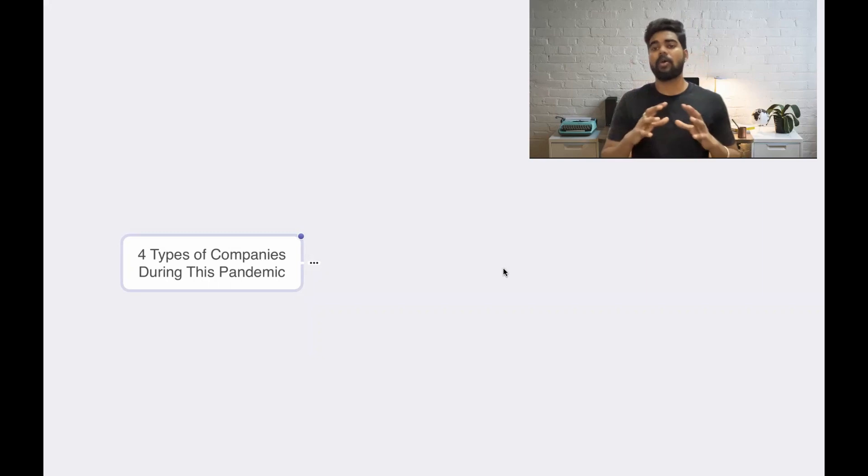I categorized all the companies in the world into four types. Whatever companies you take, those companies fall under these four categories. So let's figure out what is that four categories and what category that you need to choose in this pandemic, which will make your career better, your lifestyle better without having any problems.